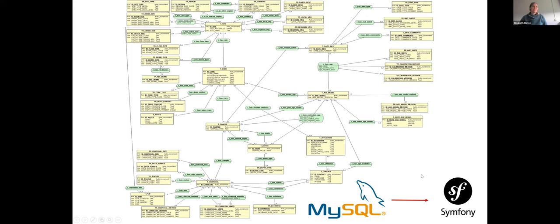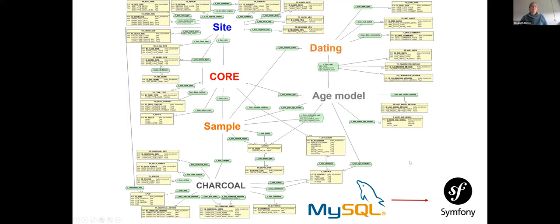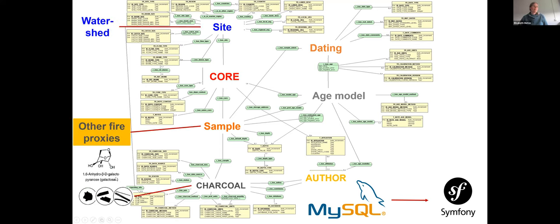This is the structure of the current Paleo Fire Database. It has actually all what we may need also for NEOTOMA — there are sites, cores, samples, charcoal properties, records, and units. We also have dating and age models in there, all associated. It's somehow a parallel development. And there is author and contributor information. The idea is that we can add other fire proxies like biomarkers, but also morphotypes, which are currently not very well represented in the charcoal database — so it would be good to have that in mind when joining NEOTOMA.